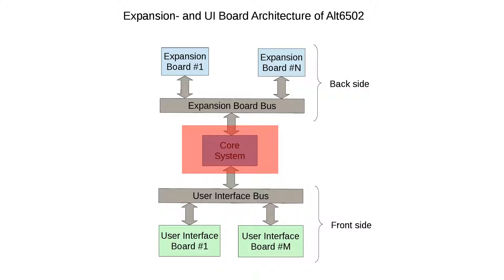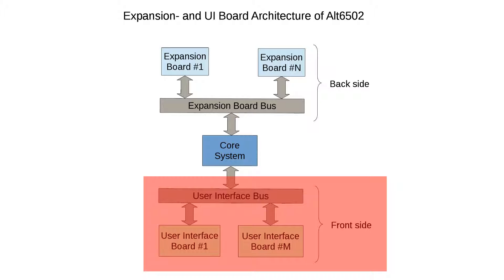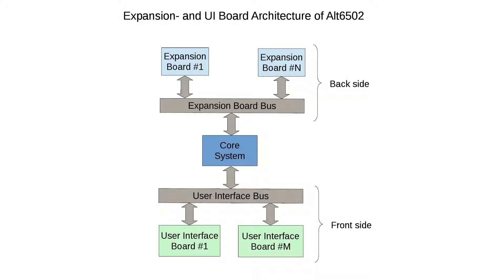It sits between the two other parts of the system. The front side is organized around the user interface bus, to which there is a set of user interface boards attached. These boards represent buttons, switches, LEDs and other controls to the user in a fashion similar to the Altair 8800. The reason for making several boards rather than one, as on the Altair, stems from the decision to make the front panel flexible and reconfigurable. The purpose of these boards is only to interact with the user and not the environment.